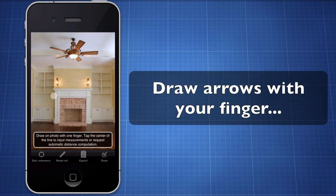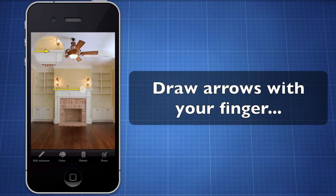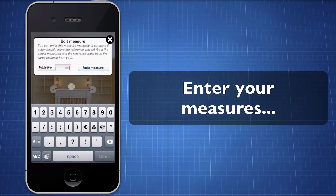Now you can use your finger to draw arrows. Place the arrow in the right position and tap on the question mark to edit the measure.